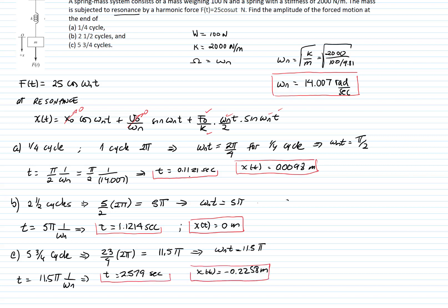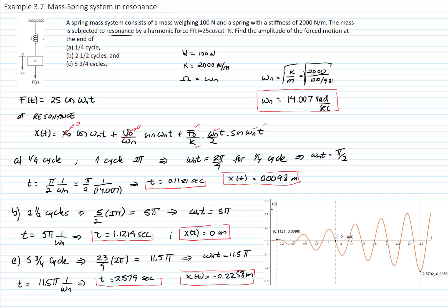Let me graph this response and those three values. Here you have the first value at 0.1121 seconds, the second value here, and the third value over here. This is at 1/4 cycle, the second is at 2 and a half cycles with zero amplitude, and the third is a maximum value at 5 and 3/4 cycles. Thanks.